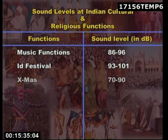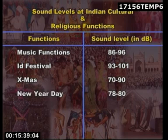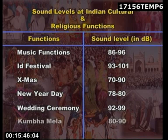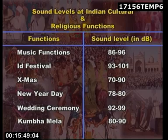Further festival sound levels: Visarjan 89–102 dB; Bhagwati Jagran 89–94 dB; Keertans 90–102 dB; Music Functions 86–96 dB; Eid Festival 93–101 dB; Christmas 70–90 dB; New Year Day 78–80 dB; Wedding Ceremony 92–99 dB; Kumbh Mela 80–90 dB.